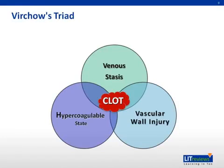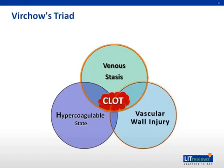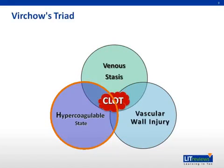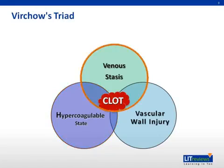Virchow's triad is an extremely important concept to memorize, as it is frequently tested and necessary on the wards when looking at a patient and trying to prevent clot — it takes all three elements to create a venous thromboembolism. Virchow's triad includes: number one, venous stasis; number two, vascular wall injury; and number three, the hypercoagulable state. Venous stasis can include turbulence, stasis, mitral stenosis, and varicose veins.